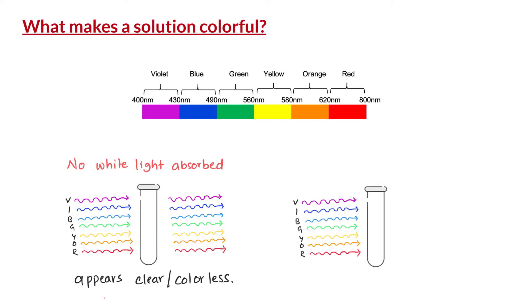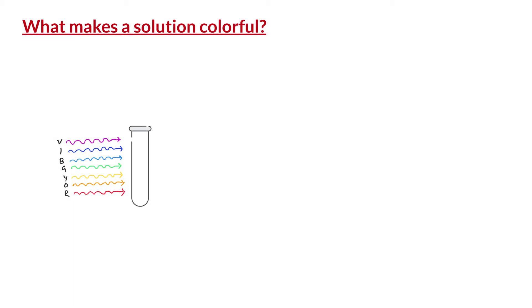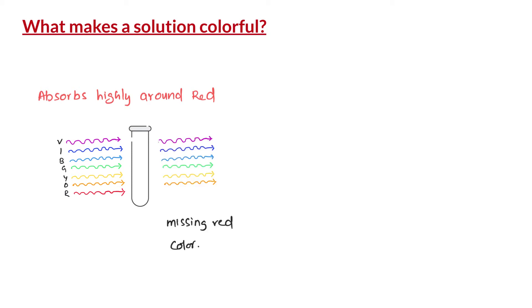If a solution absorbs all the wavelengths of visible light, it appears black or gray. In between these two extremes, what if a solution absorbs highly around one wavelength or one color and transmits all the remaining wavelengths? For example, if a solution absorbs the wavelengths around red color, the transmitted light no longer contains the wavelengths around red. Therefore, it does not appear as white light — the remaining wavelengths together appear as some different color, in this case green.